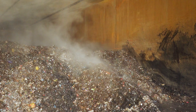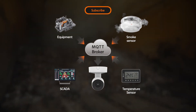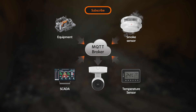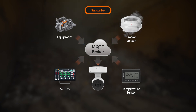This system also subscribes to other devices. For example, a smoke sensor or temperature sensor can notify the camera via the MQTT broker. The camera then takes action, such as sending email or handover.